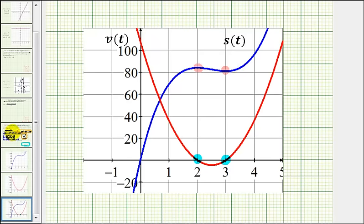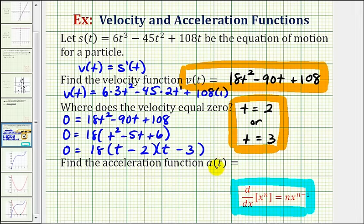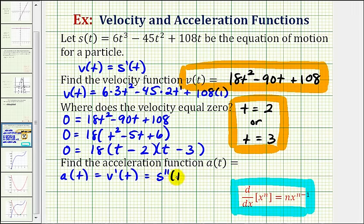Now going back to our last question, we're asked to find the acceleration function. The acceleration function measures the rate of change of velocity with respect to time, which means the acceleration function is the derivative of the velocity function. We can also say this is equal to the second derivative of the position function. Since we already have the velocity function here in black, let's use it to find our acceleration function.